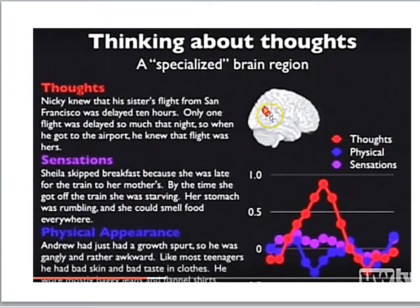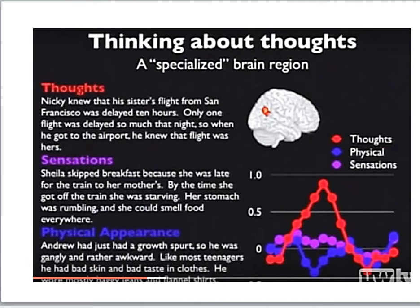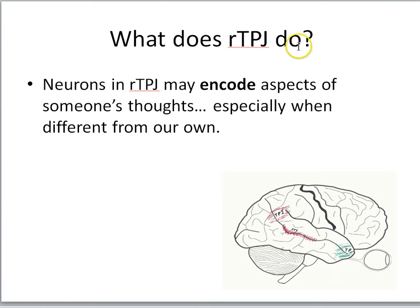This slide shows the location of the right temporal parietal junction — the signal for thoughts is much greater than for stories about physical appearances or sensations. So what does the right TPJ do? Saxe argues it may be encoding aspects of someone's thoughts, especially when they're different from our own. Just as neurons in the face area encode different faces, the right TPJ is encoding thoughts — unobservable, but nevertheless represented by activity in this brain region.